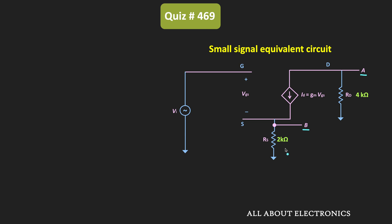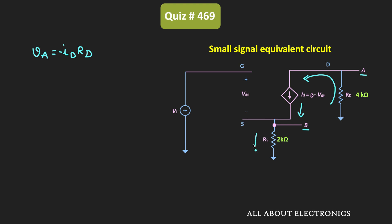Now let us find the ratio of Va and Vb. As you can see in the small signal model, the drain current Id is flowing such that we can say voltage Va is equal to minus Id times Rd. The same drain current is also flowing through resistor Rs, so voltage Vb is equal to Id times Rs — that is the voltage drop across the 2 kilo ohm resistor.